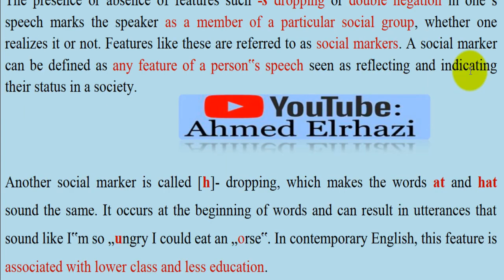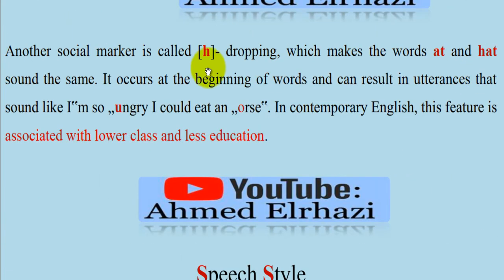Double negation is especially a social marker. It is one of the features associated with a particular social class, such as the use of certain prepositions and nouns that can indicate class membership.